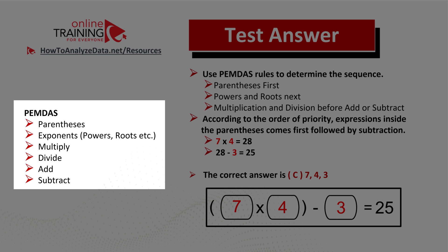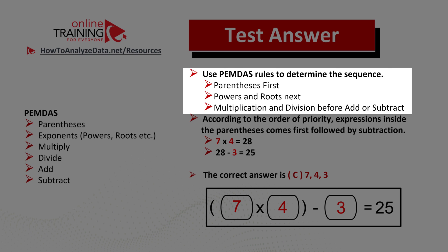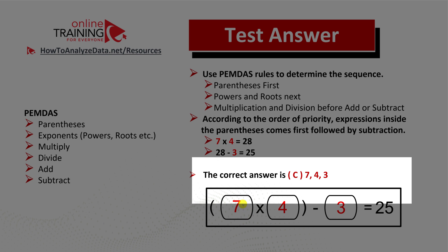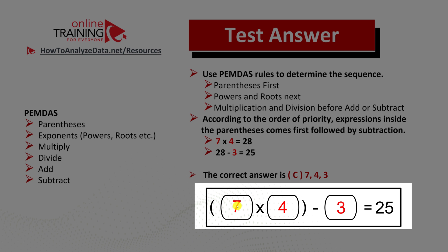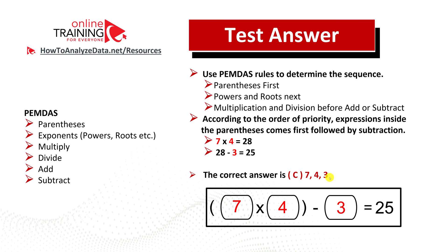In this case, we need to multiply seven by four first, then subtract three, to get the result of 25. So the correct solution is choice C: seven four three. Hopefully you've nailed this question, but in case you need more questions or practice problems, please make sure to check out my ebook in the description section of this video.